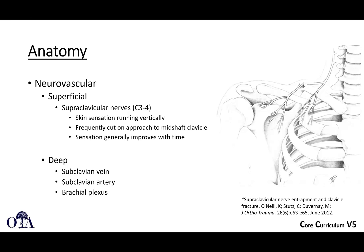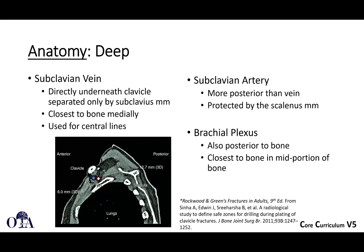Deep structures to be aware of are the subclavian vein, subclavian artery, and the brachial plexus. The subclavian vein is directly beneath the clavicle, separated only by the subclavius muscle — very close, as you can see in this sagittal view. Those who have placed central lines know you bounce off the clavicle and direct inferiorly to access it. Be especially careful when operating on late fractures with adhesions and scar tissue. The subclavian artery is more posterior, protected by the scalene muscles, and the brachial plexus is also posterior, closest to bone in the mid-portion.